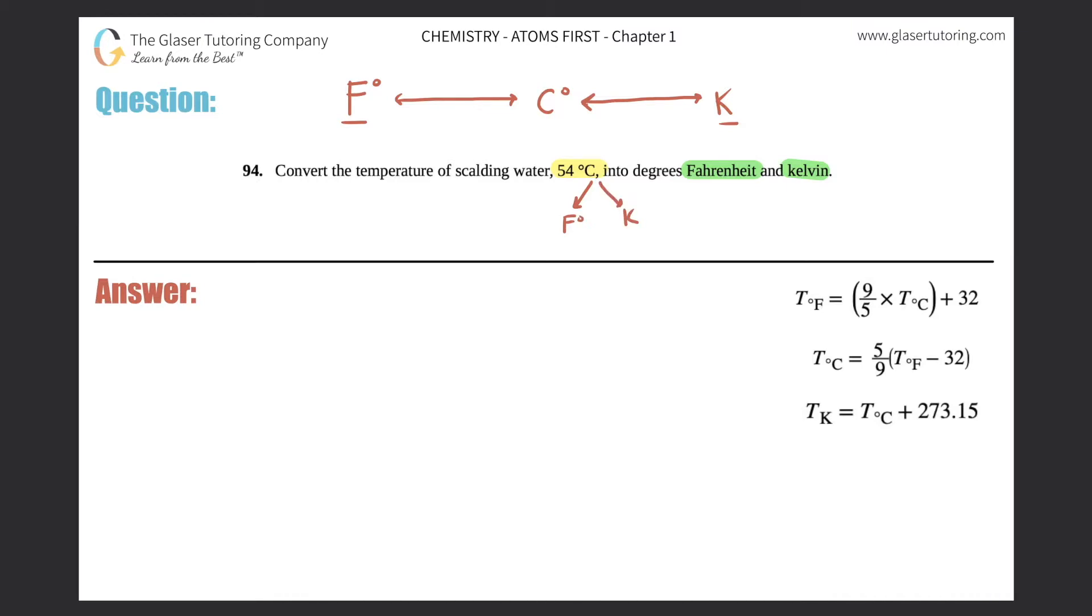So the first thing I'm going to do is Celsius to Fahrenheit. Now, if we're trying to solve for Fahrenheit, I'm just going to use a formula in which I'm equaling to Fahrenheit. So that would be the first one. T in F means Fahrenheit temperature. So I'm going to use this first equation to solve for that.